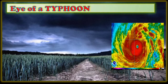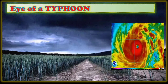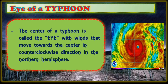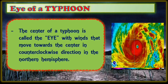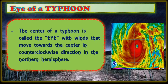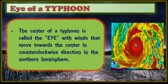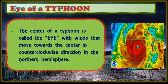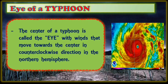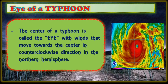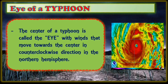Let's discuss the eye of a typhoon. The center of a typhoon is called the eye, with winds that move towards the center in a counterclockwise direction in the northern hemisphere. The center or eye of the typhoon is the calmest part — it has only light winds and fair weather. But when they come onto land, the heavy rains, strong winds, and large waves can damage life and properties.